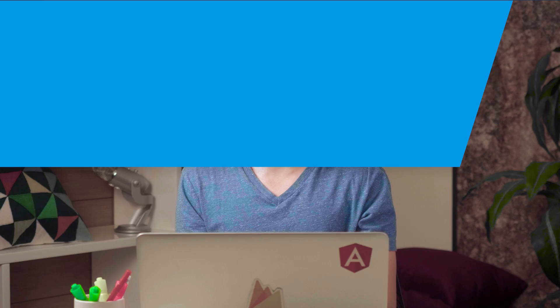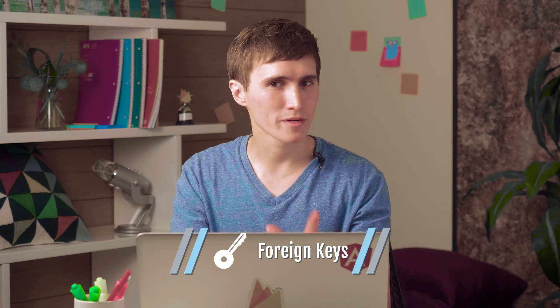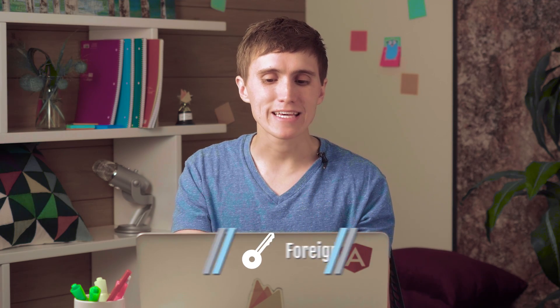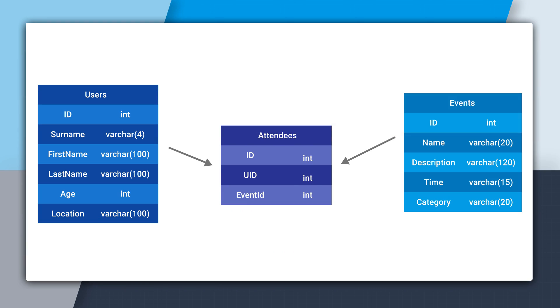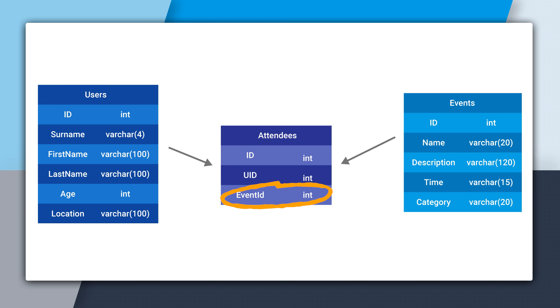What creates this relation is called a foreign key. A foreign key is a key in one table that references a primary key in another table. In this case, the UID key in attendees is a foreign key for the users table, and the same goes for event ID, which is the foreign key for the events table.